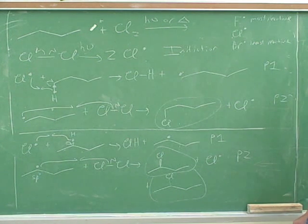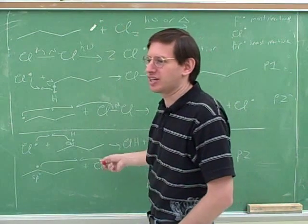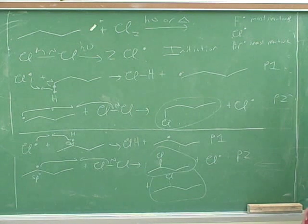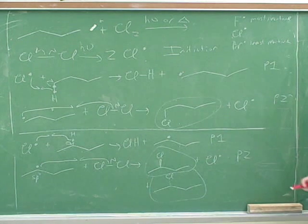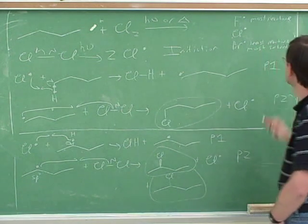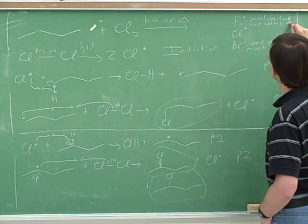Because iodine is below bromine in the periodic table, it's even less reactive — so unreactive that it doesn't really undergo radical halogenation at all. Of the halogens that do, bromine is the most selective for substituted carbons, because it needs the most help from a stabilized radical. Fluorine, being so reactive, is the least selective — it will take almost any hydrogen it encounters.